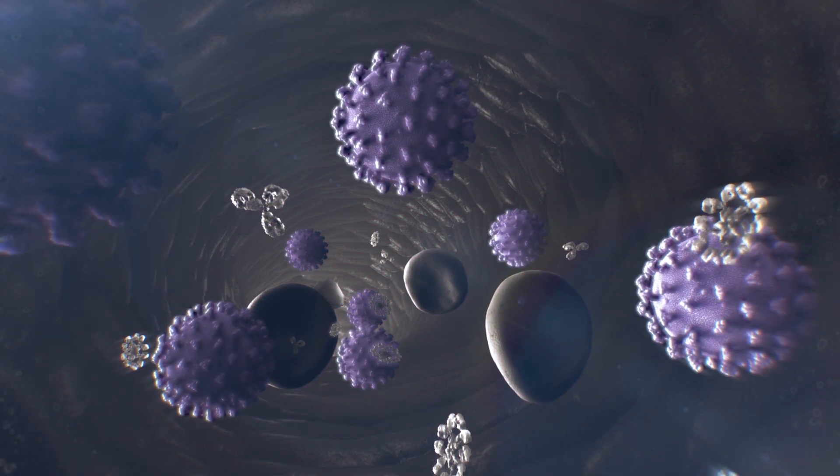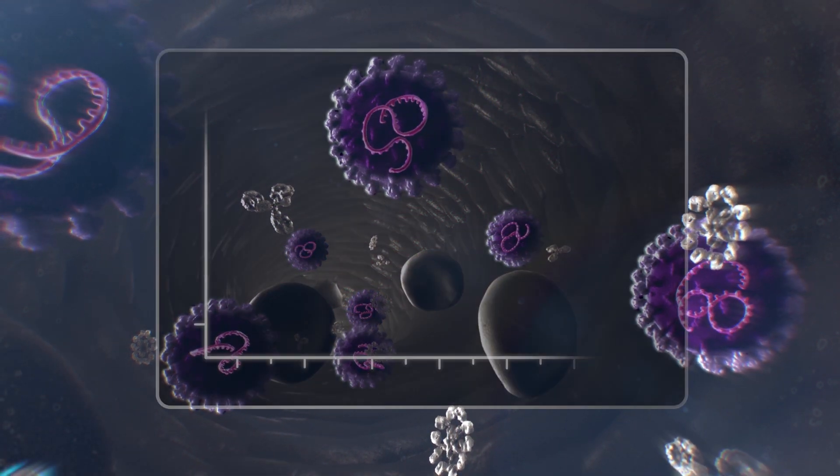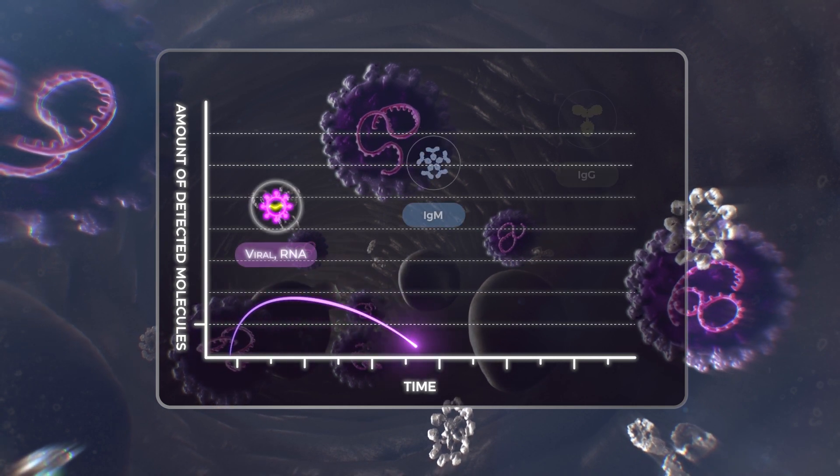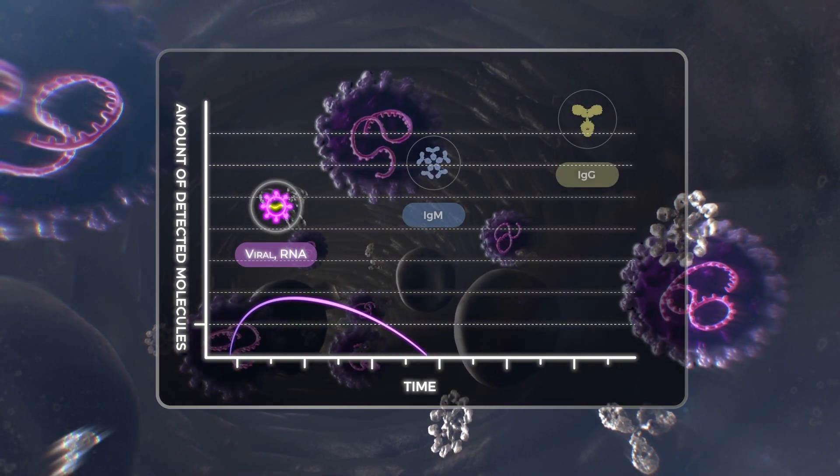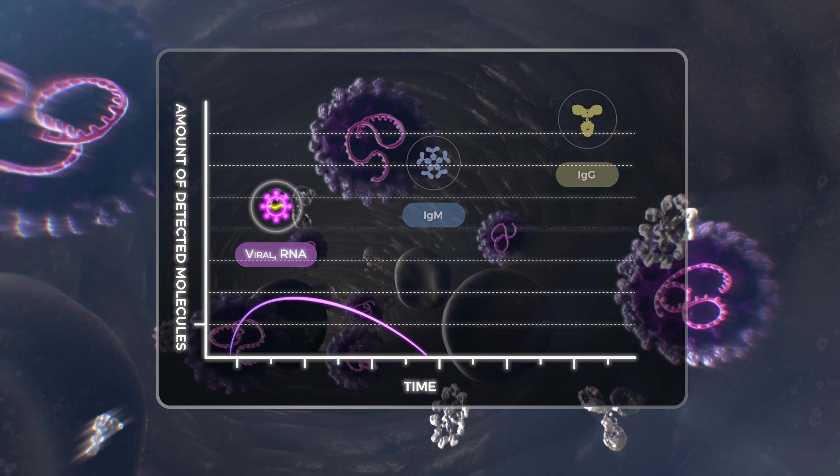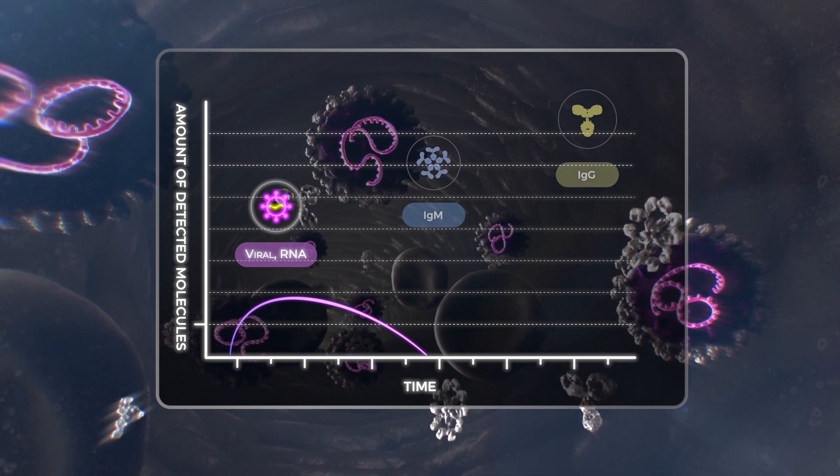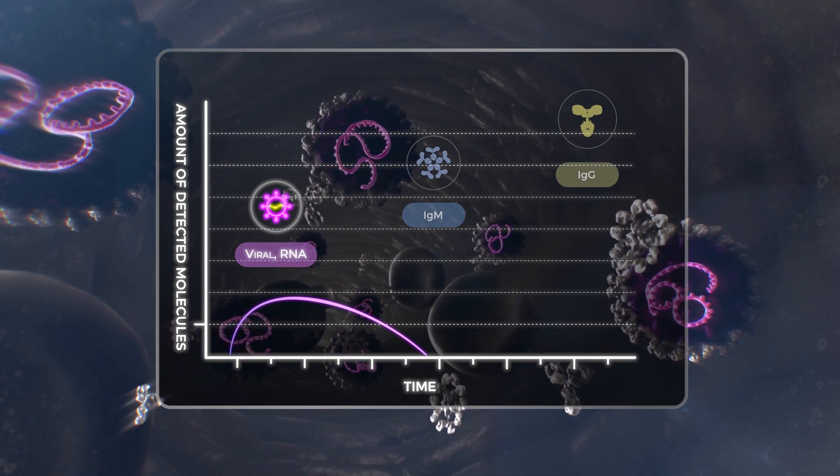Detecting the presence of viral RNA in body fluid gives a snapshot of a person's current infection status. It doesn't reveal information about past infection or future immunity because the RNA disappears when the patient recovers.